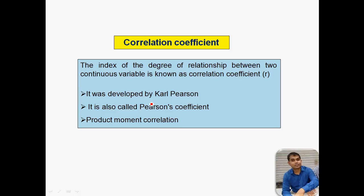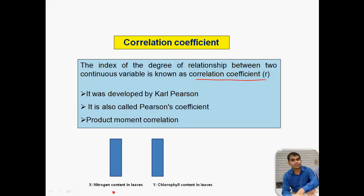After that it is needed to find out the correlation coefficient. In most statistics we use the correlation coefficient instead of only correlation. This is because correlation alone — for example between nitrogen content and chlorophyll content — does not give a clear picture of the degree of relationship between the two variables. The correlation coefficient indicates the index of degree of relationship between two variables, so you can easily predict how much both variables are related to each other.